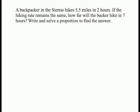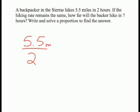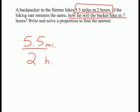Now let's look at a word problem. A backpacker in the Sierras hikes 5.5 miles in 2 hours. If the hiking rate remains the same, how far will the backpacker hike in 7 hours? Write and solve a proportion to find the answer. First, we can set up a proportion of 5.5 miles to 2 hours. We know we're traveling 5.5 miles in 2 hours. Now we need to find out how far the backpacker will go in 7 hours if he continues at that same rate.